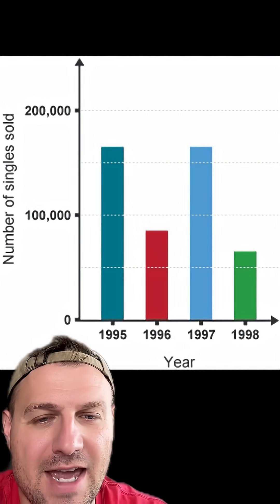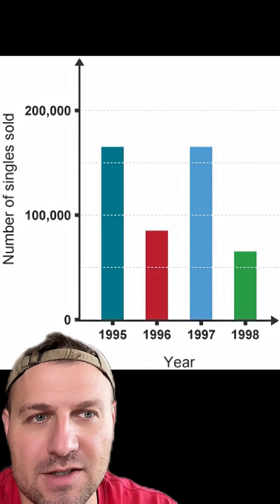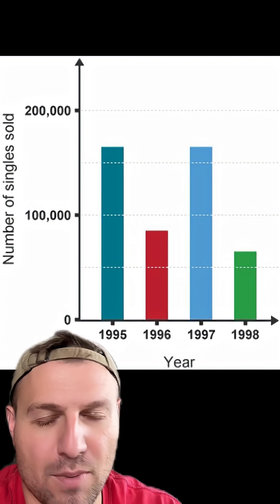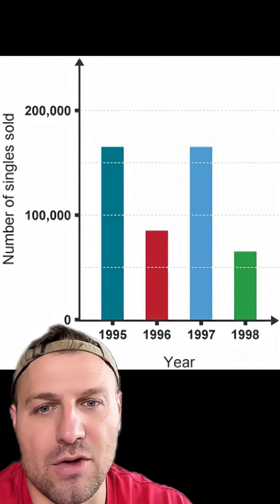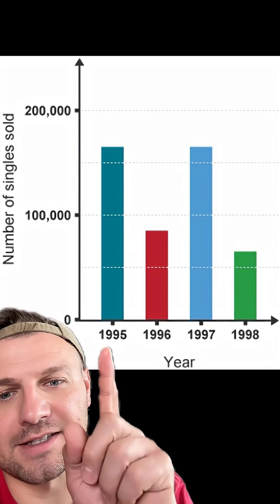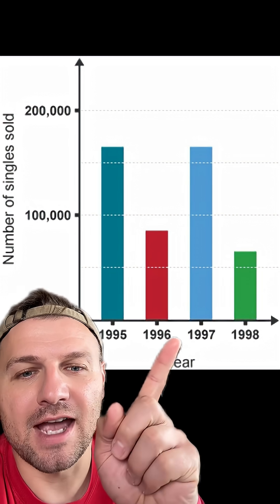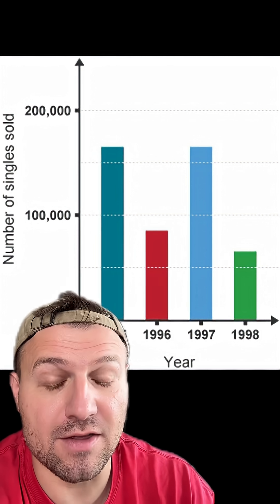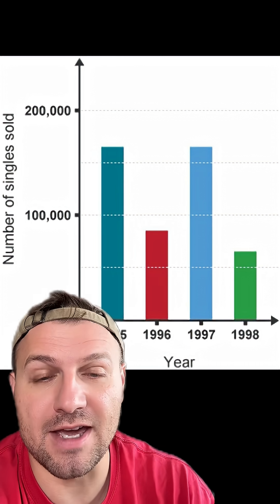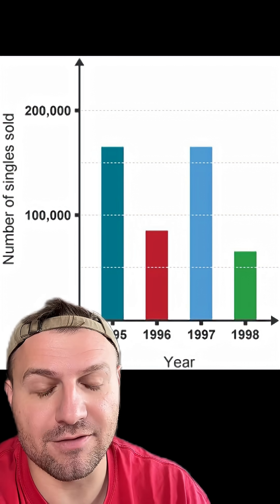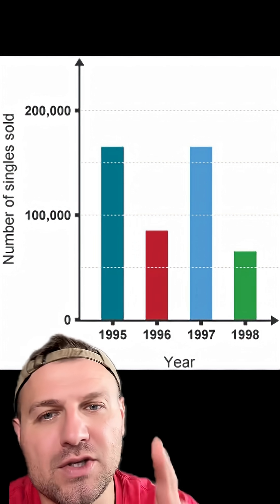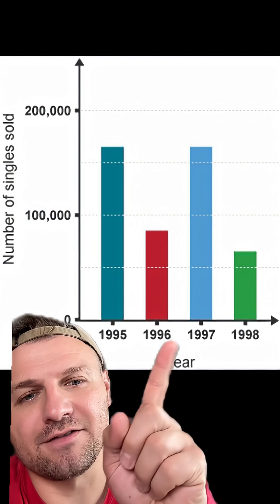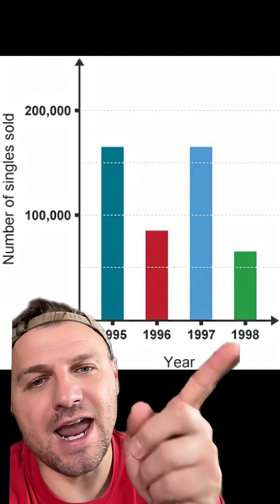This is what the actual data looks like in a regular bar graph. You can tell here that 1995 and 1997 are a lot closer than they appeared in that original graph, as well as when you compare 1995 to 1998.